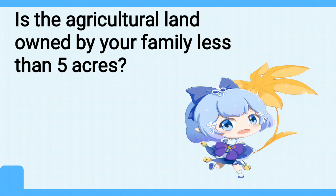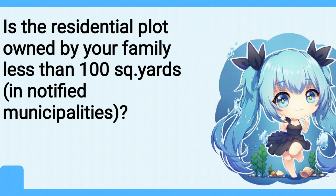Criteria 3: Is the agricultural land owned by a family less than 5 acres? To be classified under EWS, your family should not own or possess agricultural land of 5 acres or above. Criteria 4: Is the residential flat owned by a family less than 1000 square feet? To be classified under EWS, your family should not own or possess a residential flat of area 1000 square feet or more.